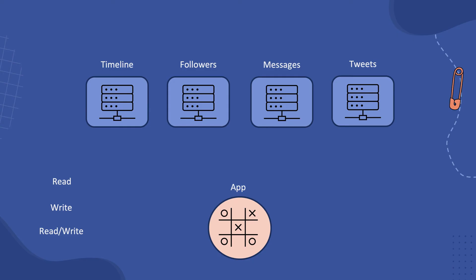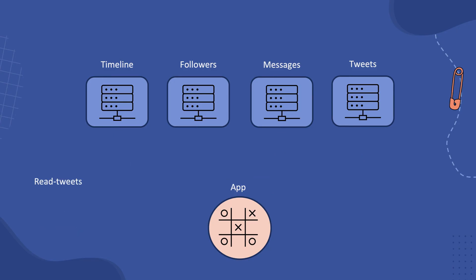Let's look at a case where an application wants to access the user's followers information and just needs a read scope. With a read scope, they can access the timeline information, followers — which is what they really needed — but they can also access messages and tweets. Messages might be really sensitive information for your users. You don't want to provide access to messages when all the application needs is follower data. So think about having a more specific scope, like 'read:tweets'. If the application only has a read:tweets scope on their access token, they can't access timeline, followers, or messages — only tweets.